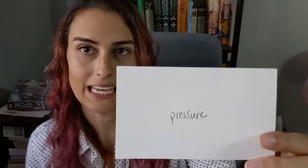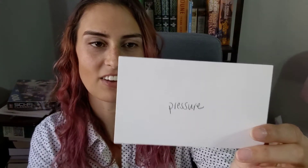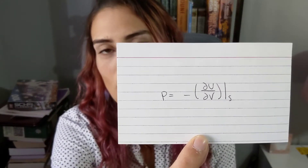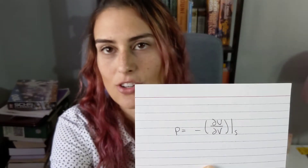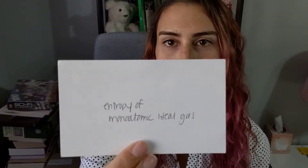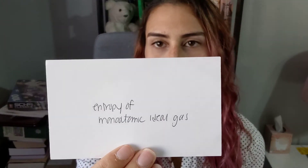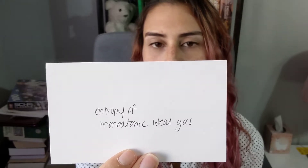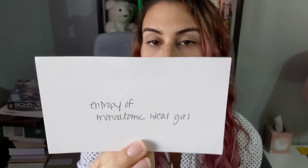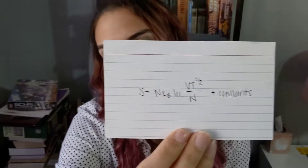Pressure P is defined as the negative partial derivative of U with respect to V at constant S, where U is the internal energy, V is the volume, and S is the entropy. The entropy of a monatomic ideal gas is S equals N k_B log(V T to the 3/2 over N) plus constants.